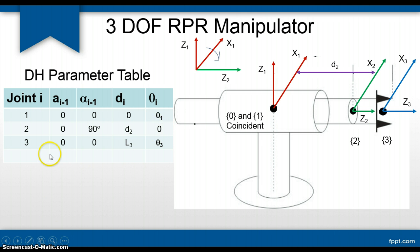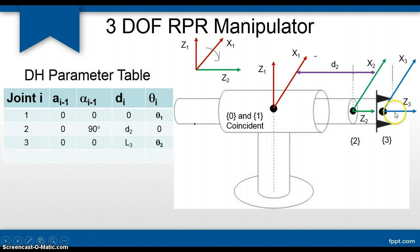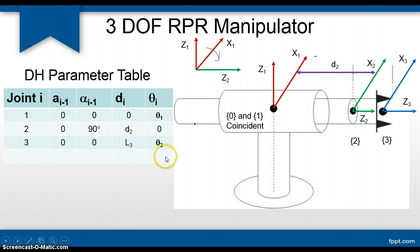For joint number 3, Z2 and Z3 are aligned in the same direction, so link length is 0 and link twist is 0. The distance D will be L3, because the length L3 is in the direction of Z3. As per the definition of joint offset, we assign Di along the Z axis, so this constant length L3 goes in the D column. θ3 indicates the rotation of the tool.